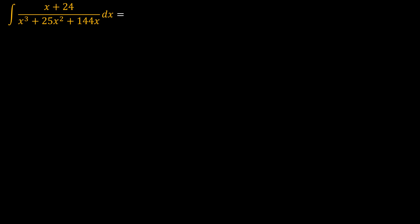The first thing I would do is look at the denominator and pull out the x. So we pull out the x and we have x squared inside the bracket plus 25x plus 144, and on top we are left with x plus 24.